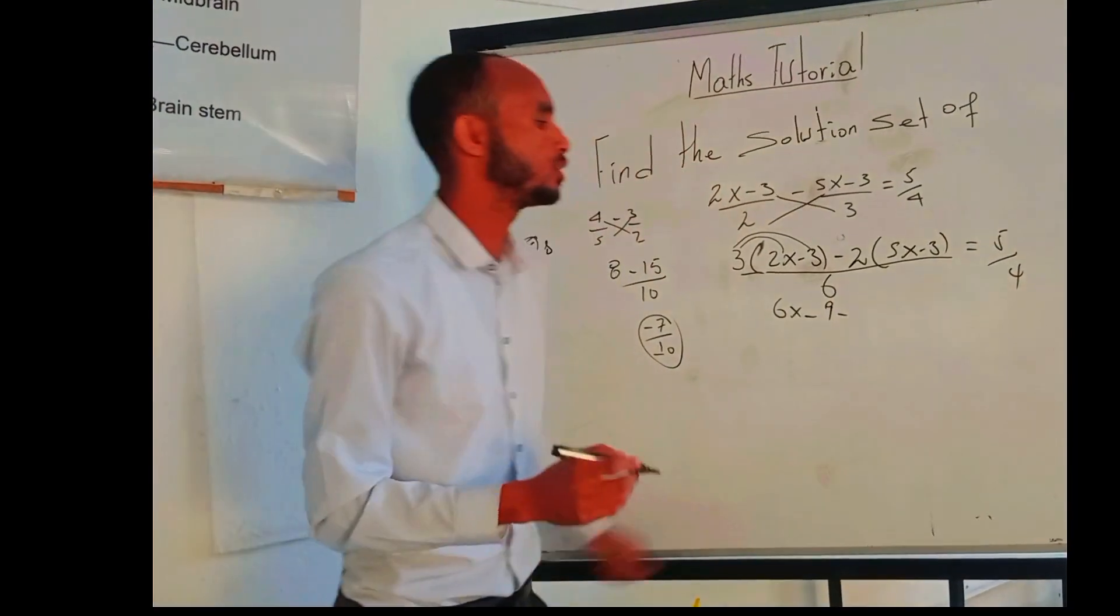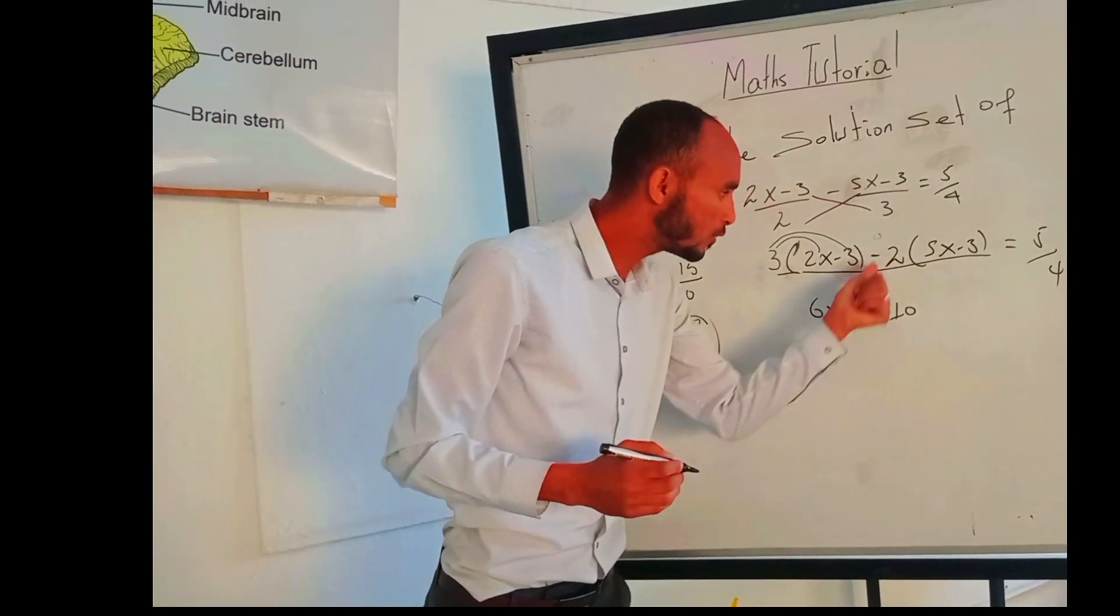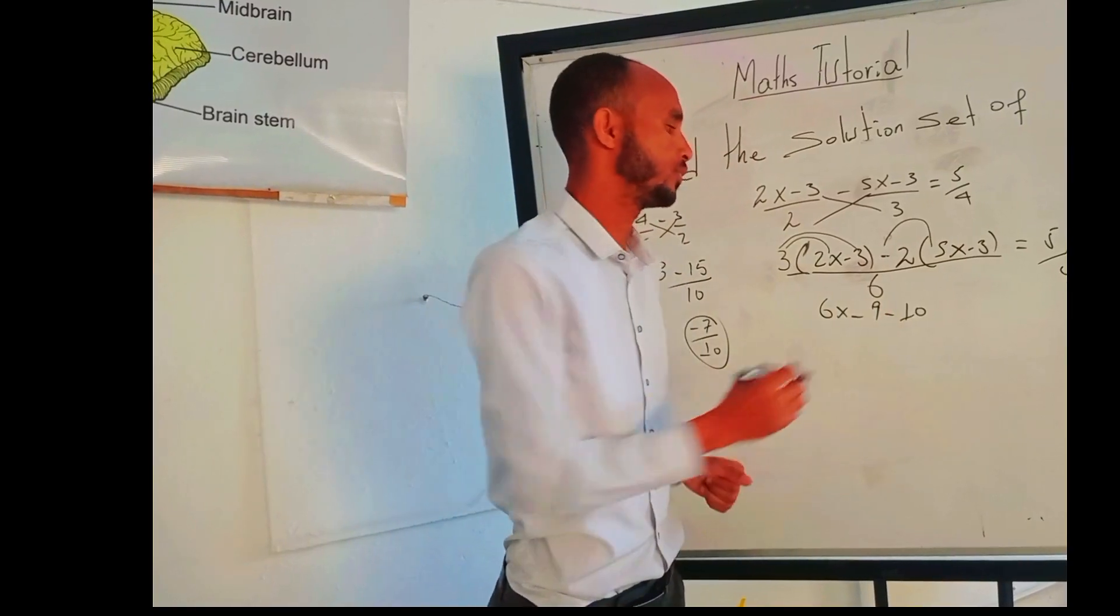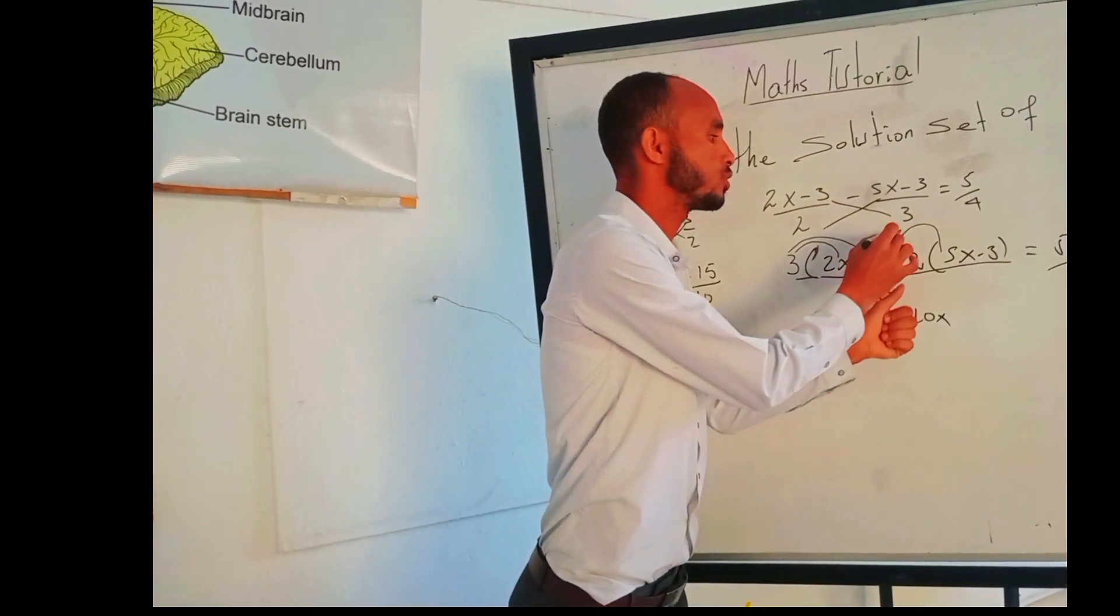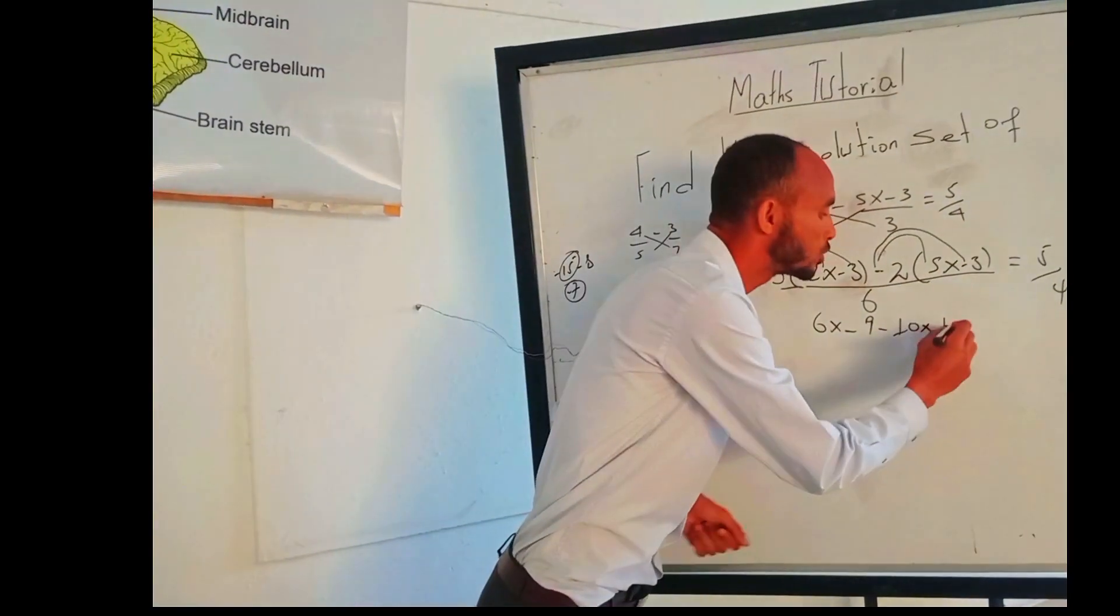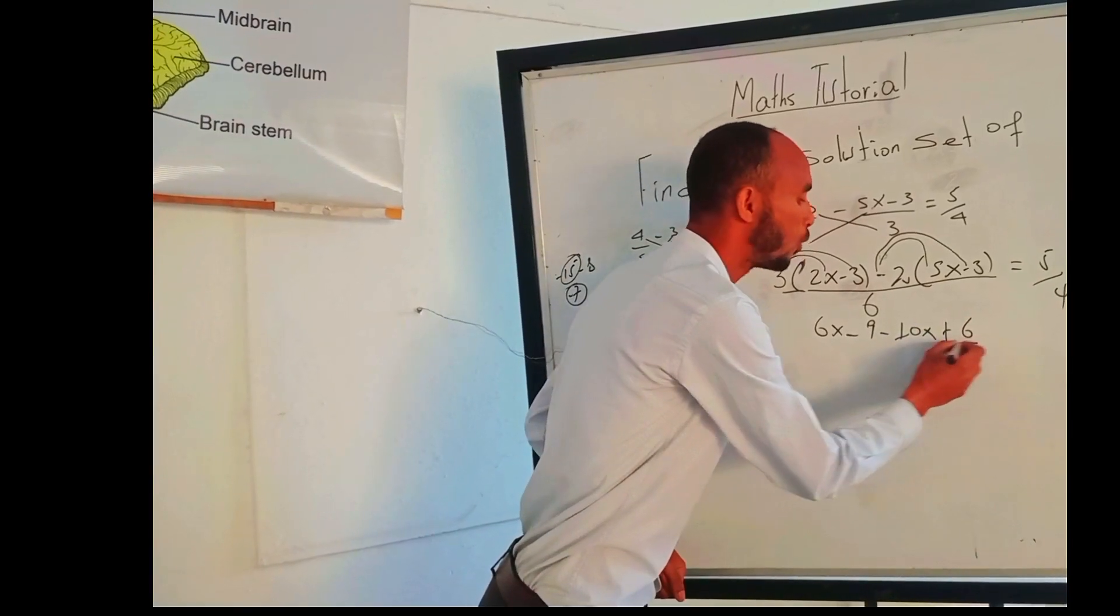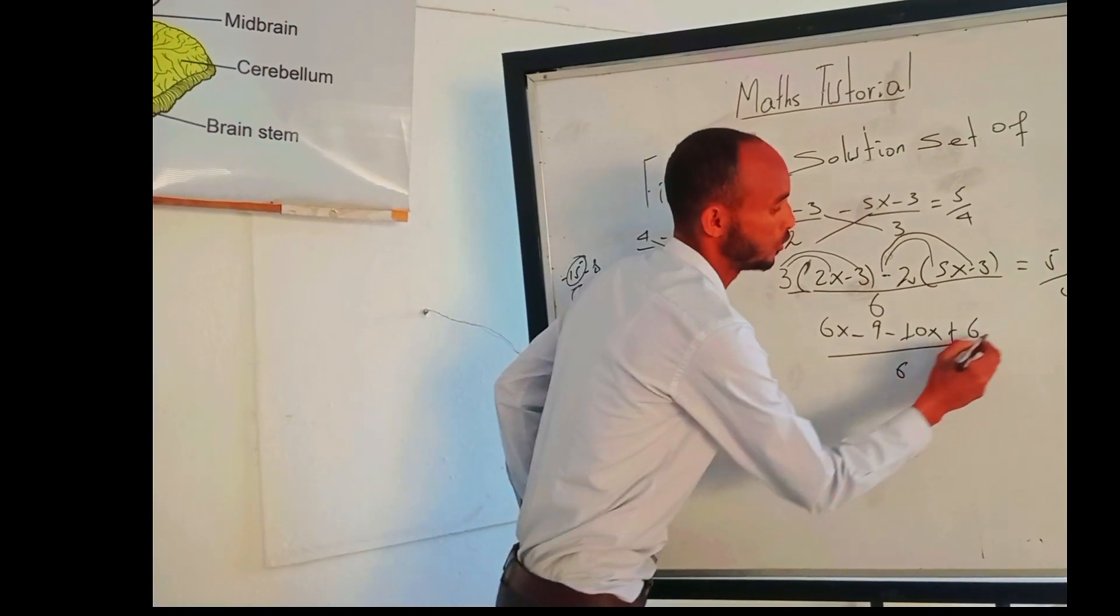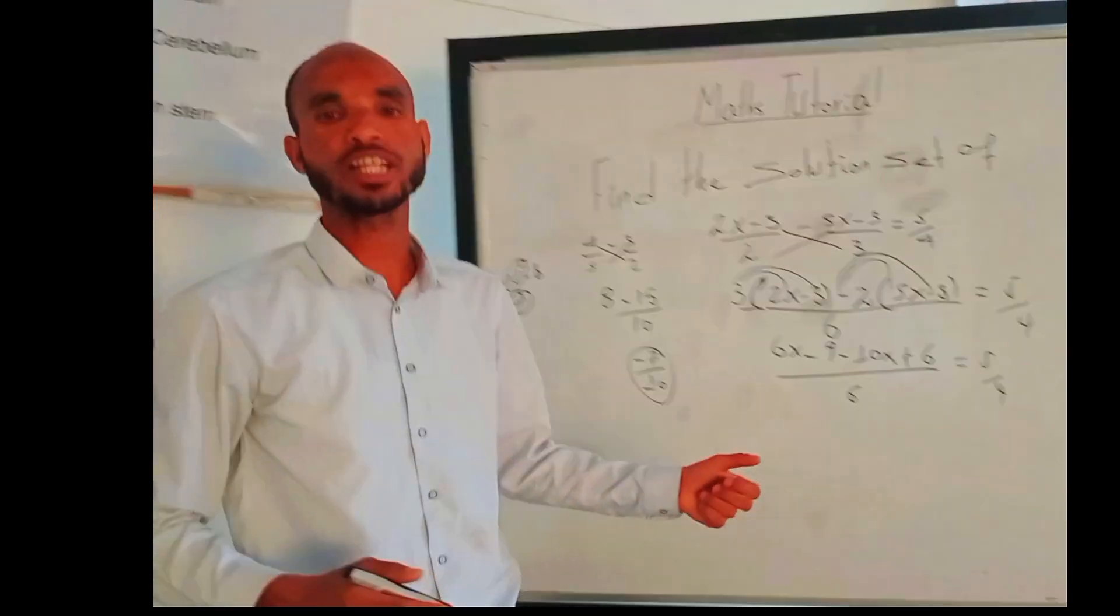Then the negative: 2 times 5x is 10x, because negative times positive is negative. Next step is negative times negative is positive, so 2 times 3 is 6. The whole over 6 which is equal to 5/4.